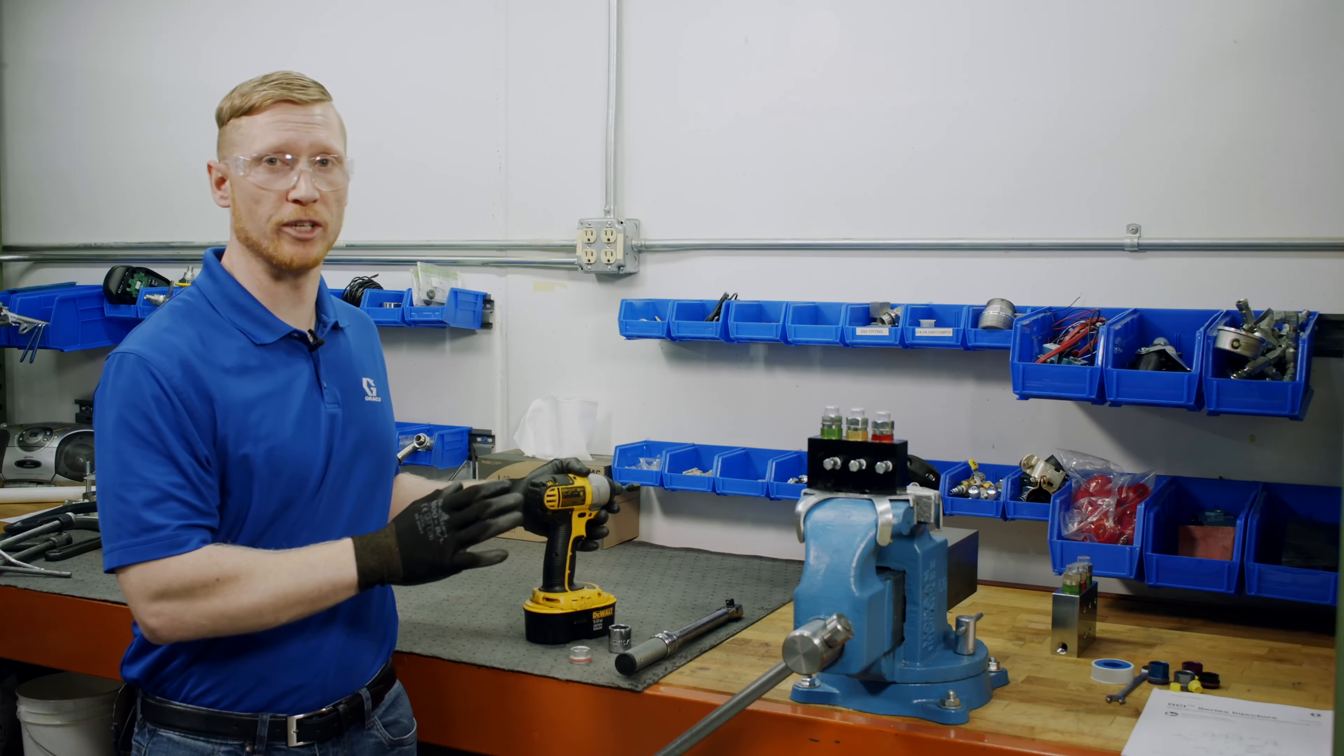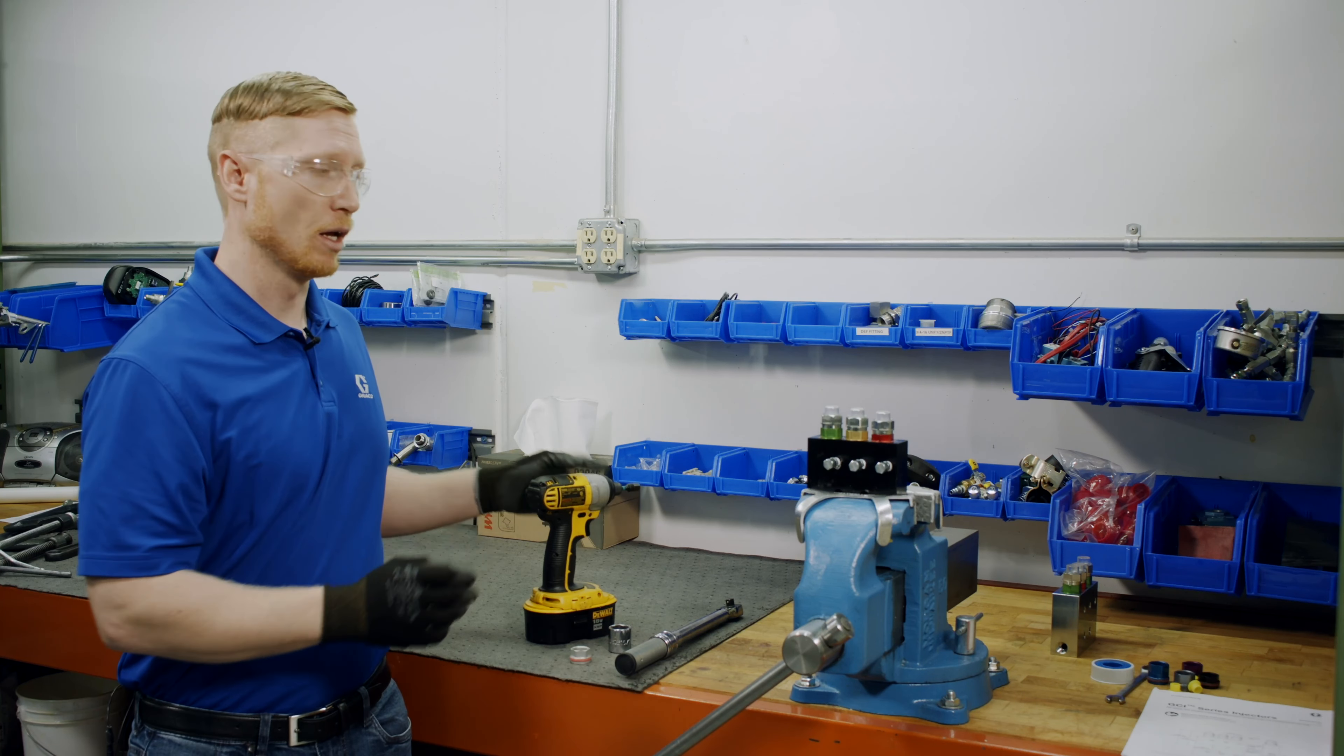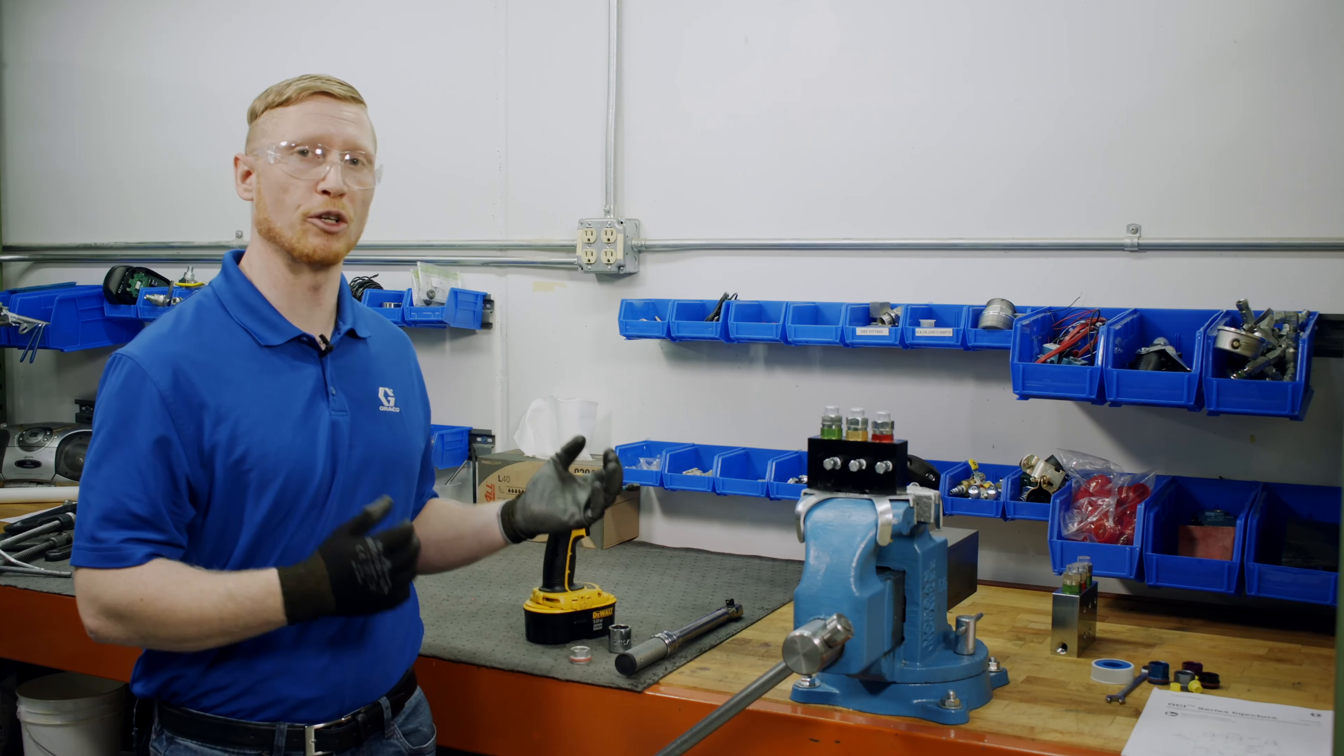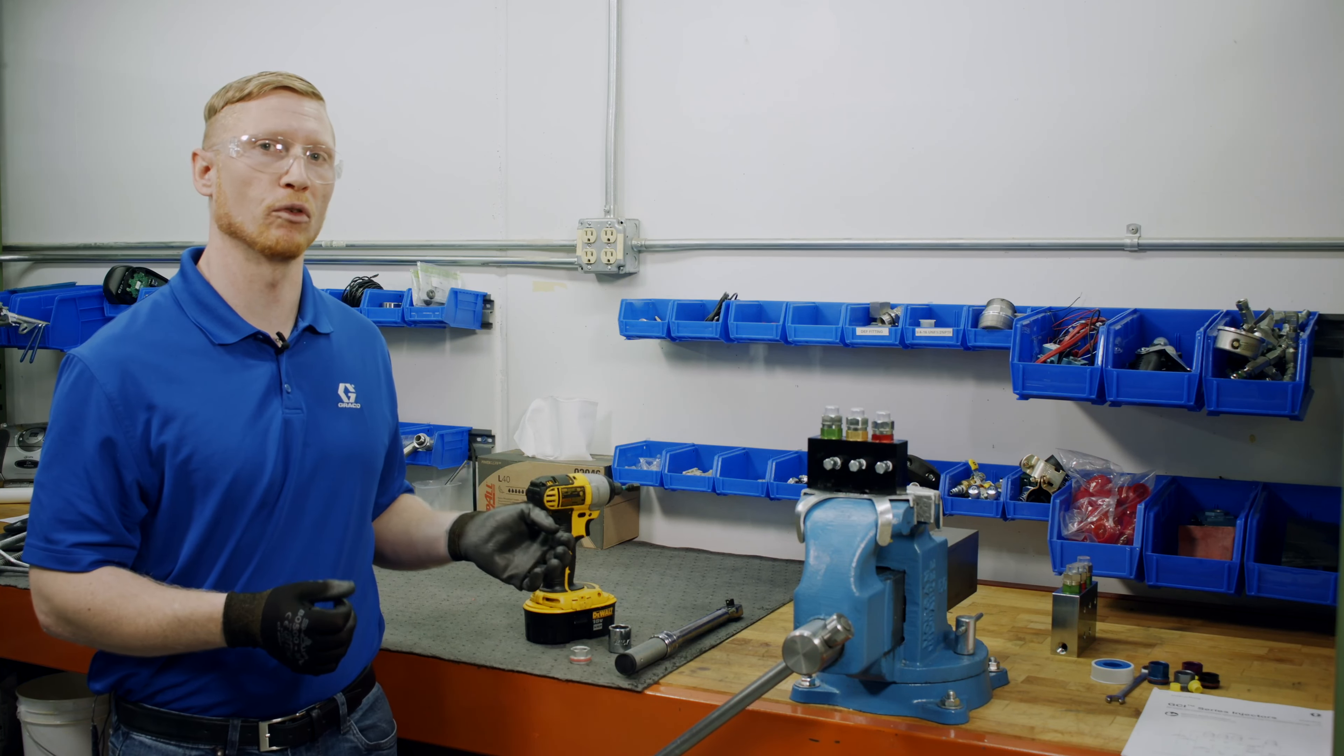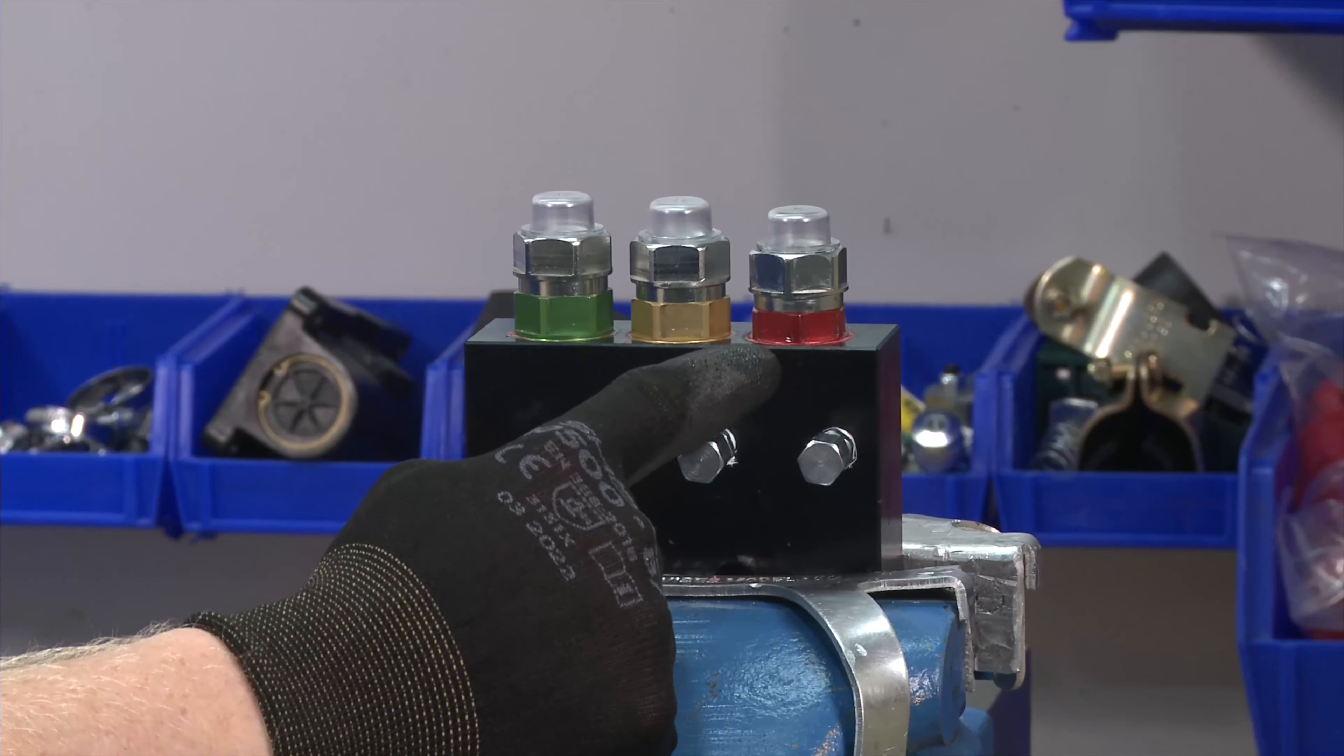Now this procedure can be done if it's installed on the machine. You don't have to take it off the machine in order to do this. I have it here in a vise, so obviously I have gone through the pressure relief procedure found in your pump manual. You're going to want to do that before servicing any of the components on your GCI manifold. So let's get started.